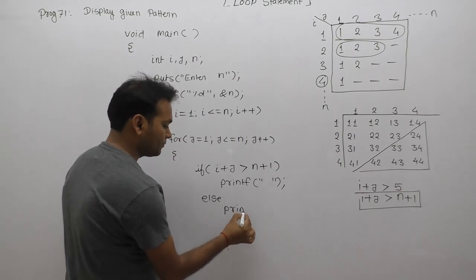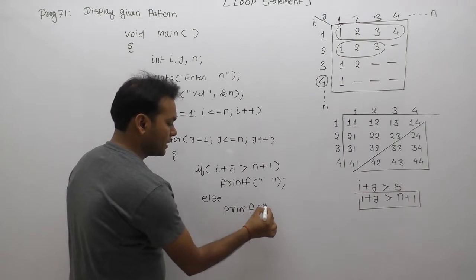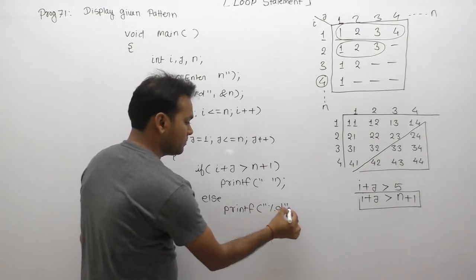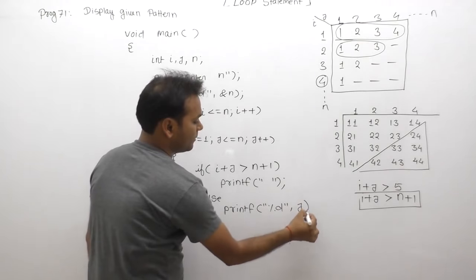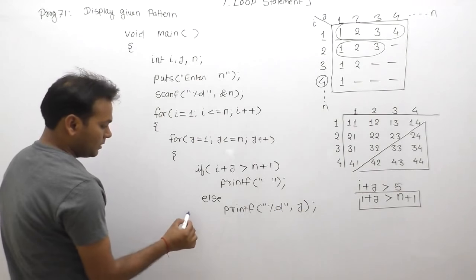Use print tab with percent d for displaying the value of j.